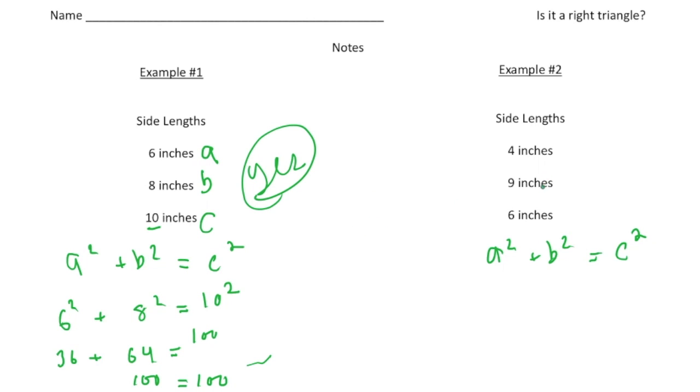Let's now take a look at the second example. Here we have side lengths 4, 9, and 6 inches. So again, the longest side has to be the c value. So here we have 4, 9, and 6. So the 9 is going to be the c. So then I'm going to have the a be the 4 and the b be the 6. So it's going to be 4 squared plus 6 squared equals 9 squared.